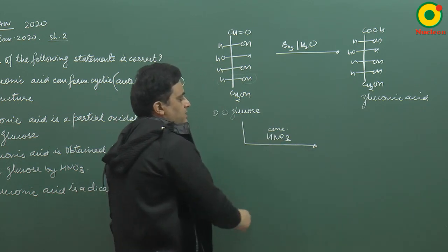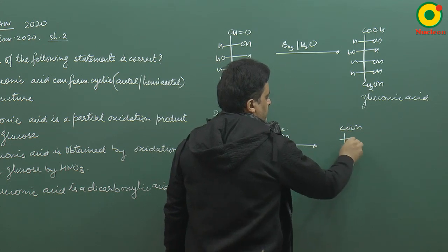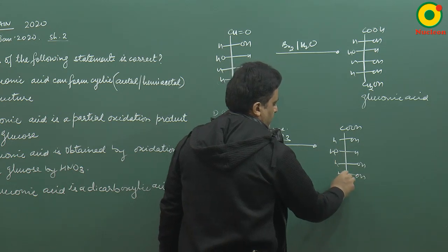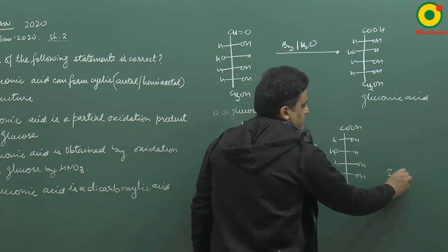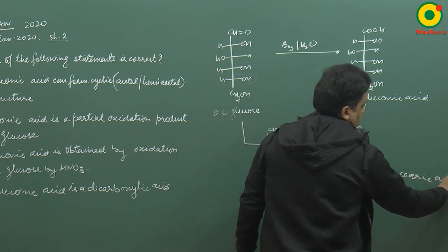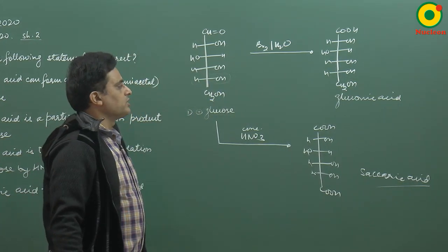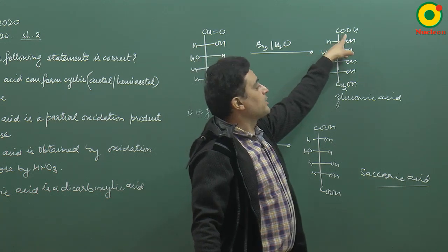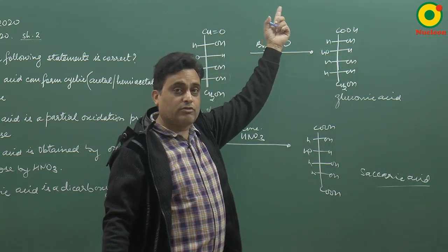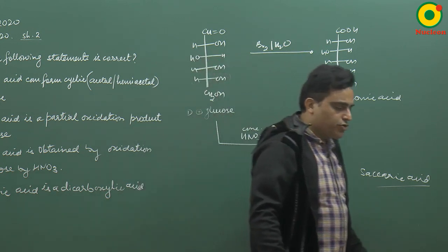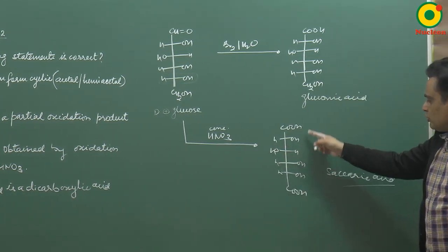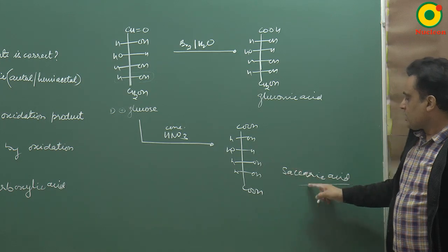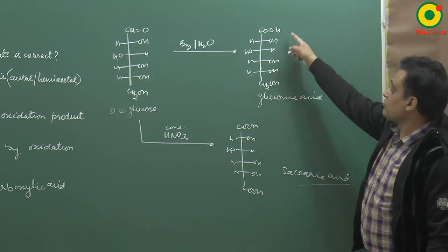HNO3 is an oxidizing agent and it is strong enough to oxidize both terminal OH groups — at carbons 1 and 6 — into COOH groups. The product from HNO3 oxidation is called saccharic acid, which is a dicarboxylic acid, while gluconic acid is a monocarboxylic acid.